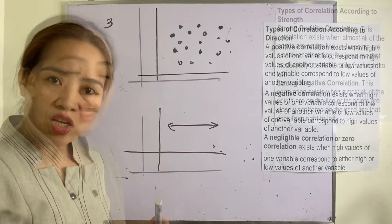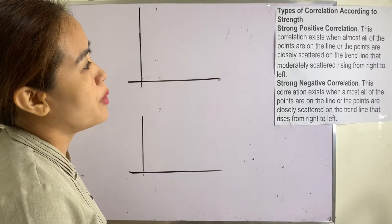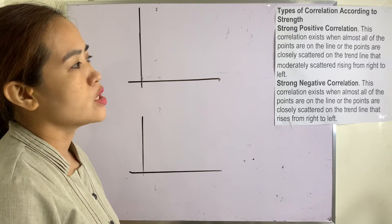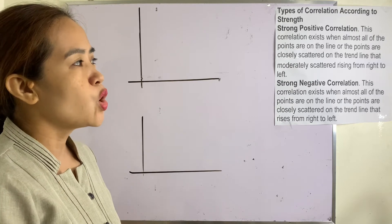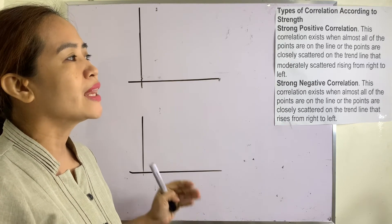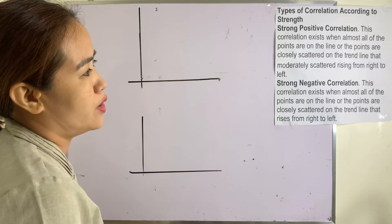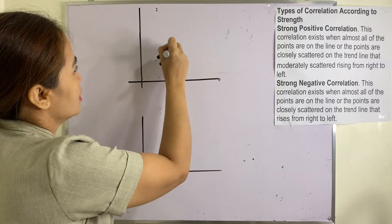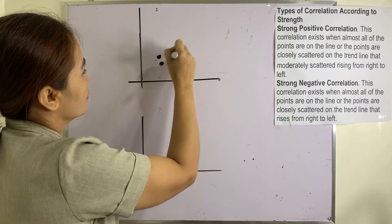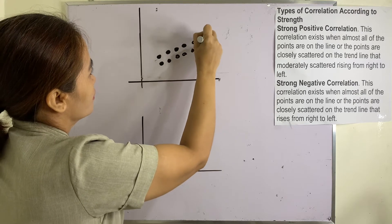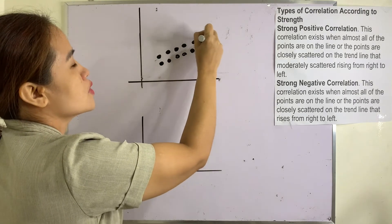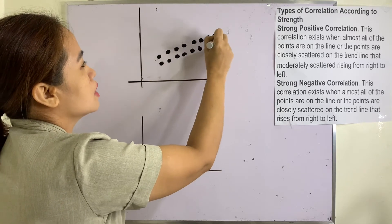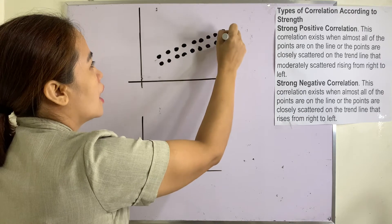Types of correlation according to strength: Strong positive correlation exists when almost all of the points are on the line, or the points are closely scattered on the trend line rising from left to right. This is how you illustrate it — the points are tightly grouped along the upward trend line, so this is a strong positive correlation.